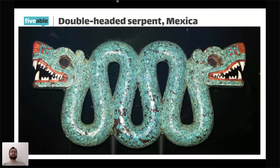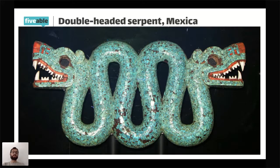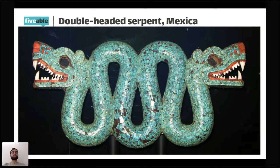Before we dive into comparison, I want to show you this really awesome picture of a beautiful piece of art — the double-headed serpent. If you ever travel to London, you can see this in their Royal Museum. This was a gift given by the leader of the Mexica, sometimes known as the Aztecs, to Fernando Cortez when he landed in the Gulf of Mexico in the 1500s. We're going to use this art a little bit later to talk about the connections and developments that occurred in the Americas during this time.